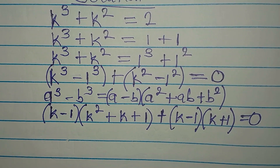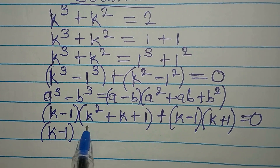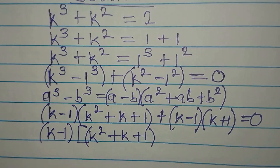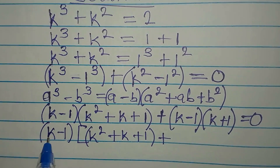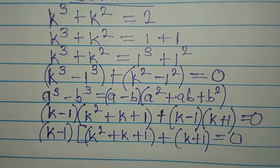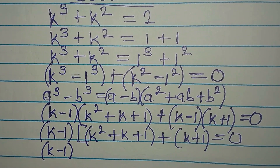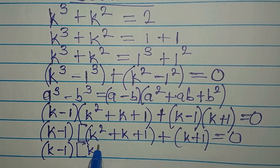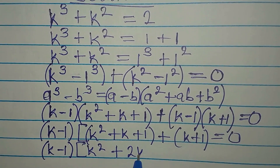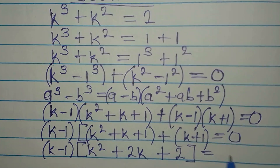We equate everything to 0. k - 1 appears in both terms so we factor it out: (k - 1)(k² + k + 1 + k + 1) = 0. Opening the bracket and combining: k² + k + k = 2k and 1 + 1 = 2, giving us (k - 1)(k² + 2k + 2) = 0.